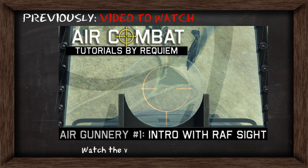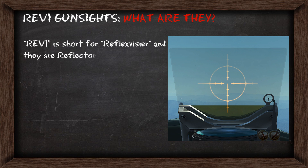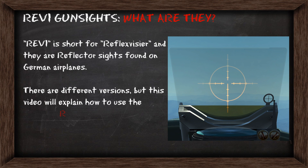Before we start, I recommend you watch the first video on air gunnery as we expand on those concepts in this video. REVI is short for Reflex Visio, and they are the reflector sights which you find in the German airplanes. There are different versions of the REVI, but this video is going to cover how to use the REVI C12-D.